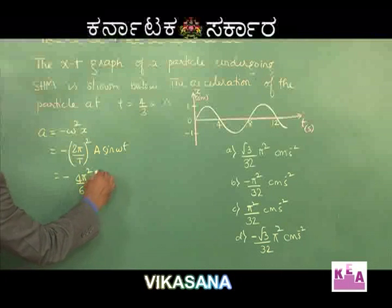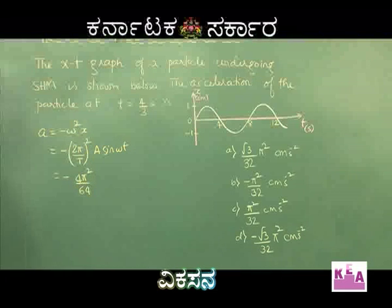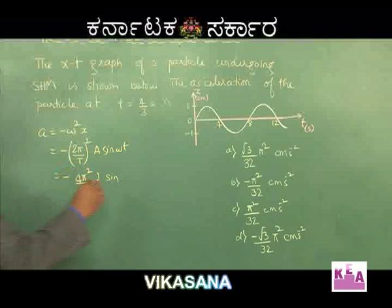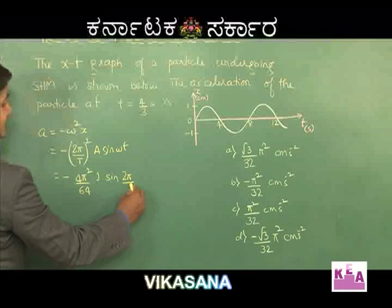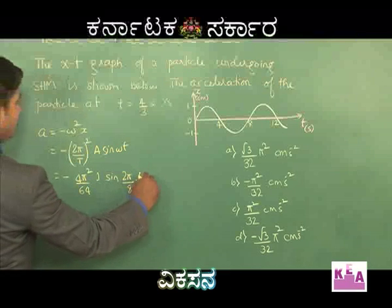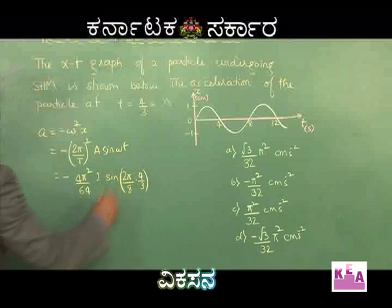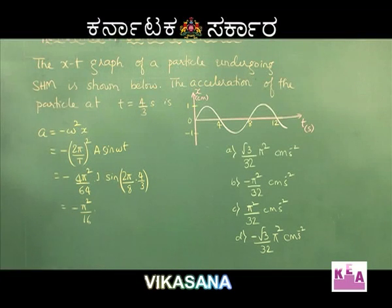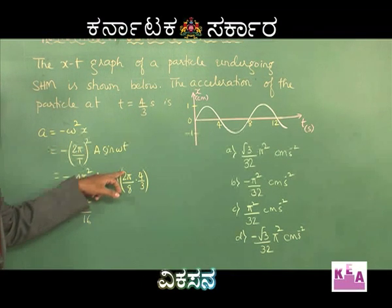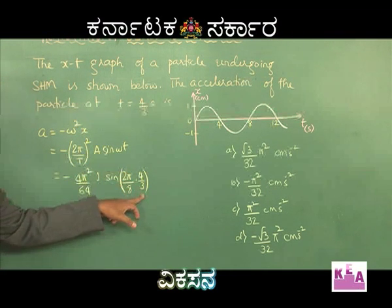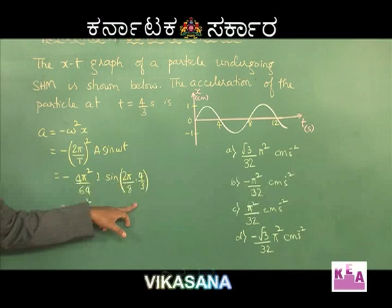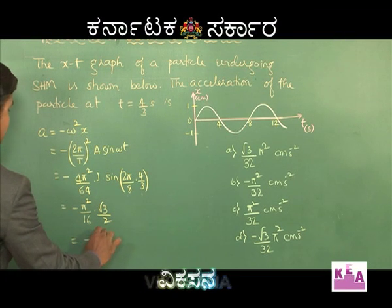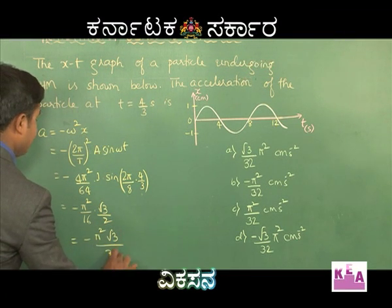The amplitude A = 1 cm from the graph. Omega t = (2pi/8) times (4/3) = pi/3. Sin(pi/3) = root 3 by 2. So the acceleration = minus (pi squared / 16) times 1 times (root 3 / 2) = minus pi squared root 3 divided by 32. The answer is minus root 3 pi squared by 32, which is option D.